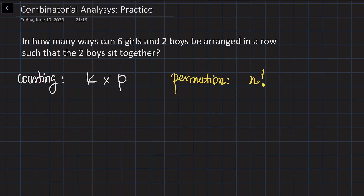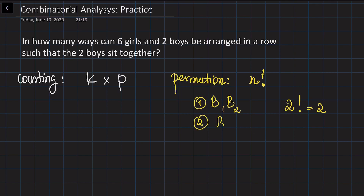Let's start with the permutation rule. For example, you have two boys, boy one and boy two. You have two distinct objects, and the number of rearrangements by the rule is equal to two factorial, which equals two. Indeed there are two arrangements: boy one, boy two, and boy two, boy one. So if you had three boys, you would have three factorial rearrangements.